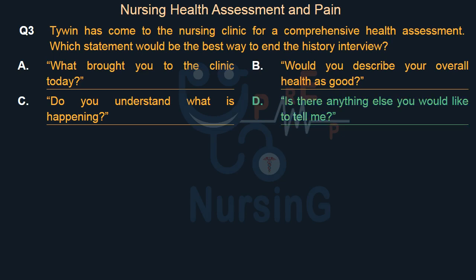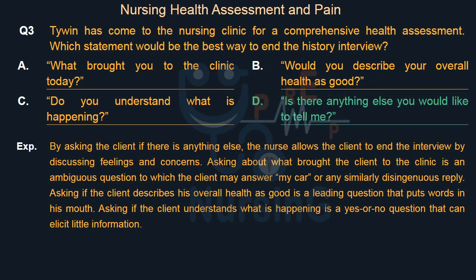The right answer is Option D: Is there anything else you would like to tell me? By asking the client if there is anything else, the nurse allows the client to end the interview by discussing feelings and concerns. Asking what brought the client to the clinic is ambiguous. Asking if the client describes his overall health as good is a leading question. Asking if the client understands is a yes-or-no question that elicits little information.